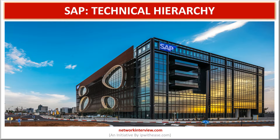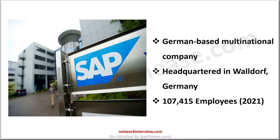Before going into the details, let's have a short introduction to the company. SAP refers to Systems Analysis and Program Development. It is the name of the software and also the name of the company. SAP is a German-based multinational company that is popular for its enterprise software to manage operations. It has 107,415 employees as per 2021 statistics.